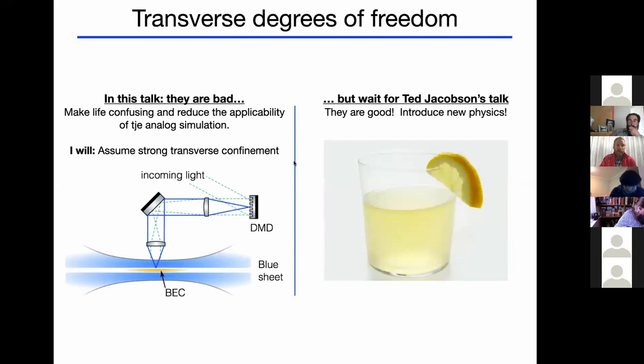Relevant to later on in this program, I'm going to assume that transverse degrees of freedom are bad, meaning that the radial degrees of freedom in the ring or any kind of degrees of freedom that are not looking at the dynamics up are bad. They make life confusing and they reduce the applicability of the analog simulation problem. So I will always assume strong transverse confinement. But always willing to make lemonade out of lemons, you should wait for Ted Jacobson's talk a little later on, where Ted and Sid are going to give a talk that transverse degrees of freedom are good. They introduce new physics and are interesting to study. So I'm not really saying they're bad. I'm going to say I will ignore them.